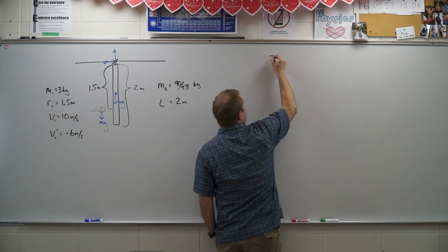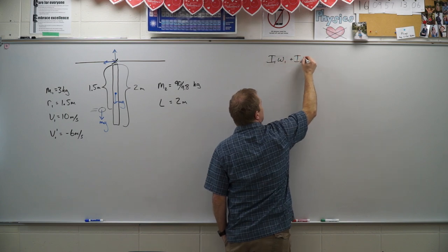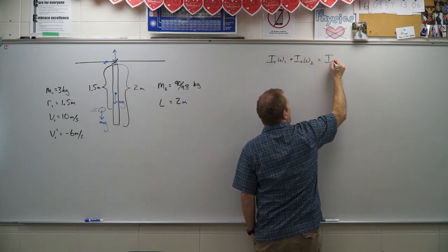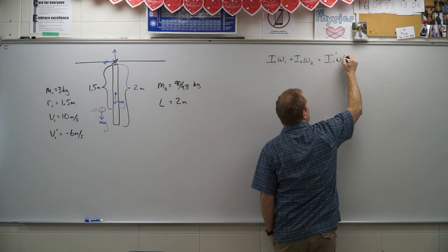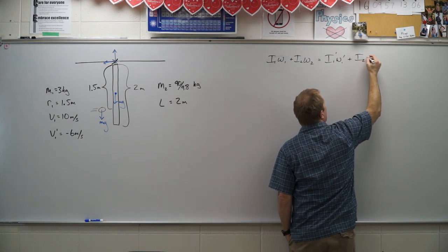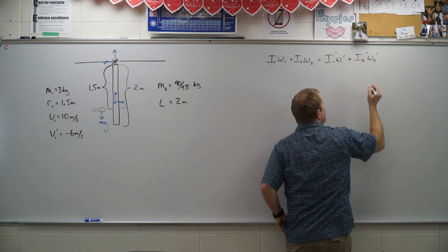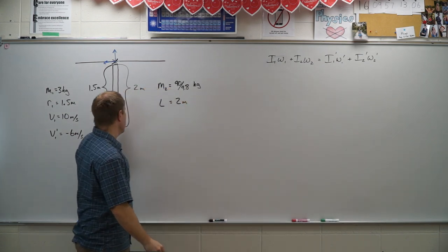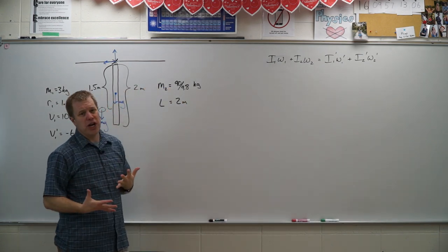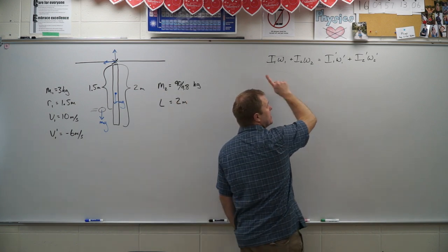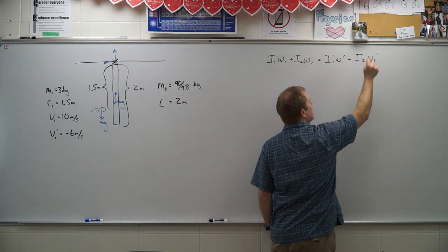So I have I1 omega 1 plus I2 omega 2 equals I1 prime omega 1 prime plus I2 prime omega 2 prime. Now a couple things to note here, the bar and the ball, they don't change. So their I values are going to be the same before and afterwards. So I'm going to get rid of those primes.